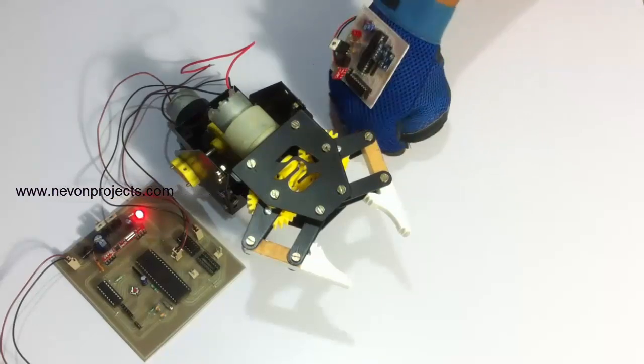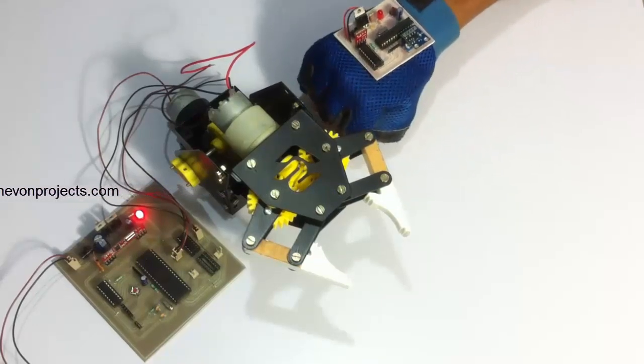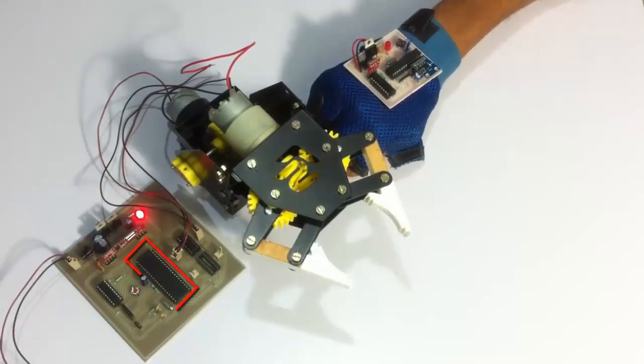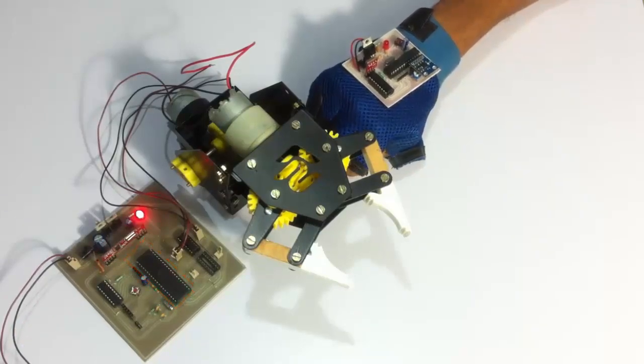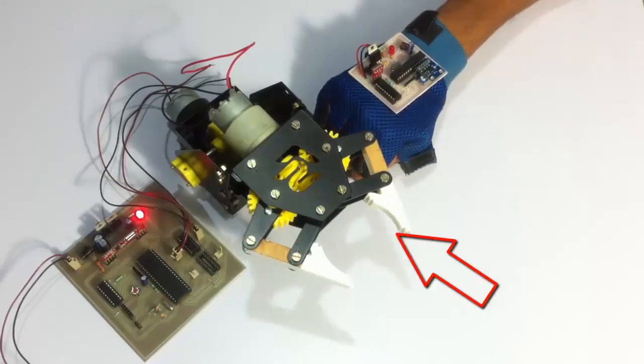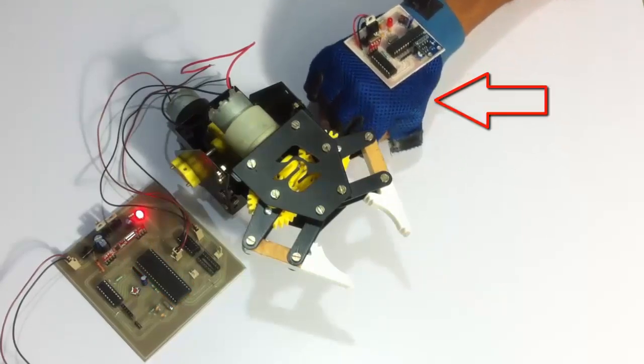For the receiving part, we use an RF receiver here which is interfaced to an A05 family microcontroller, which has motor driver ICs which are used to control the robotic arm movement.